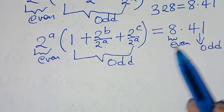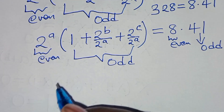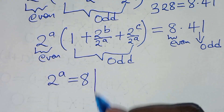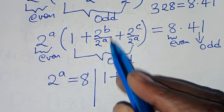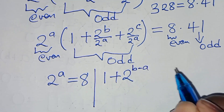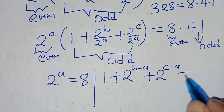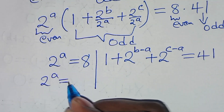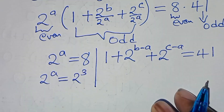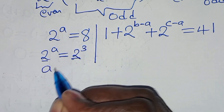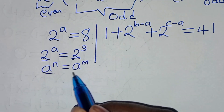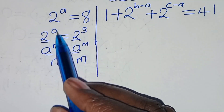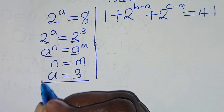Matching even to even: 2^a = 8. Since 8 = 2^3 and the bases are common, the exponents must be equal, so a = 3. Matching odd to odd: 1 + 2^(b−a) + 2^(c−a) = 41.